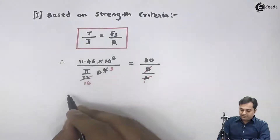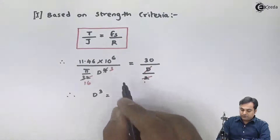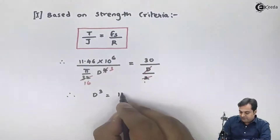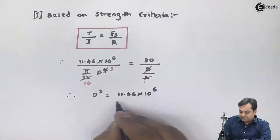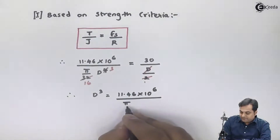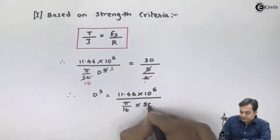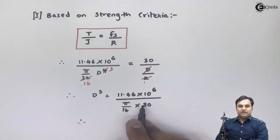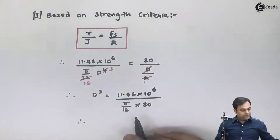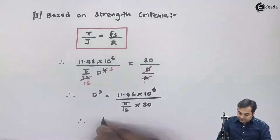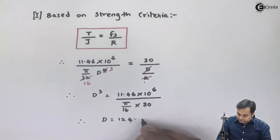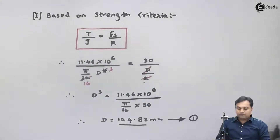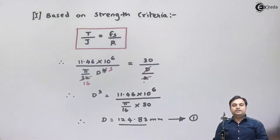Therefore, D cubed equals 11.46 into 10 raised to 6 divided by pi by 16 into 30. Calculating the numerator upon denominator and taking the cube root, D comes out to be 124.83 mm. I will call this equation number one, obtained from the strength criteria.